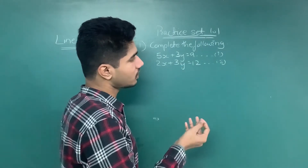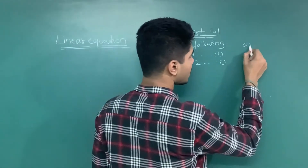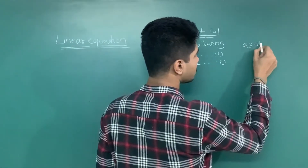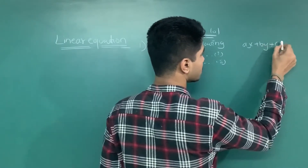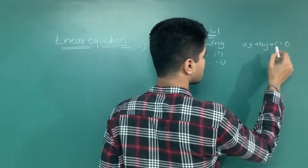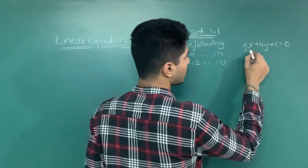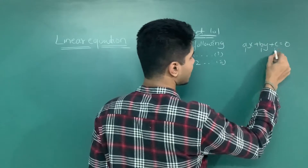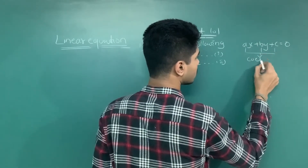The general form of a Linear Equation is AX plus BY plus C is equal to 0, where A, B, and C are coefficients.